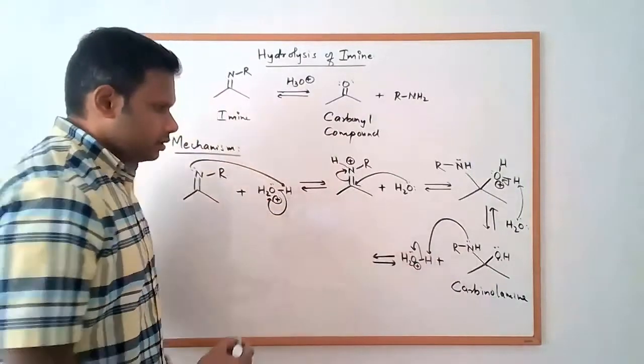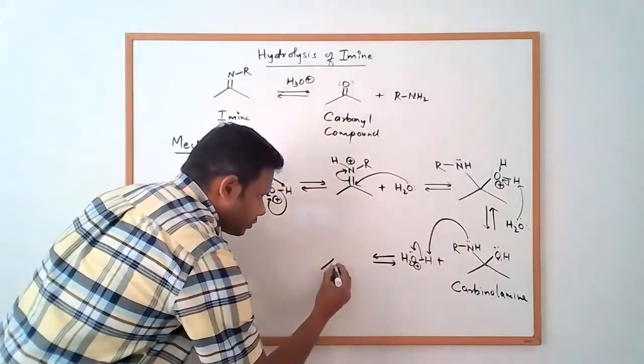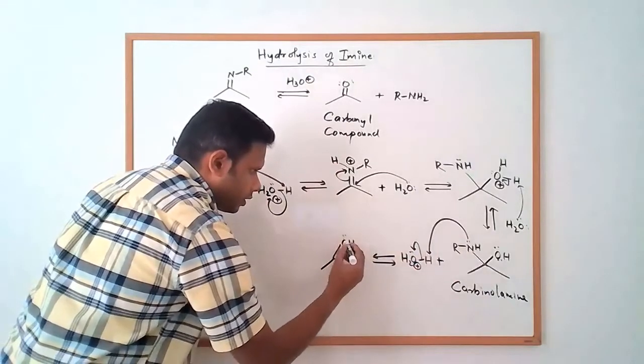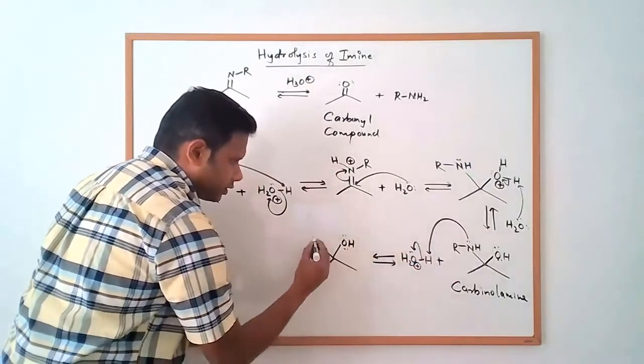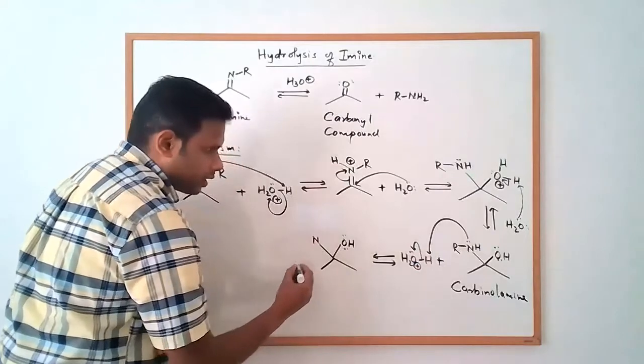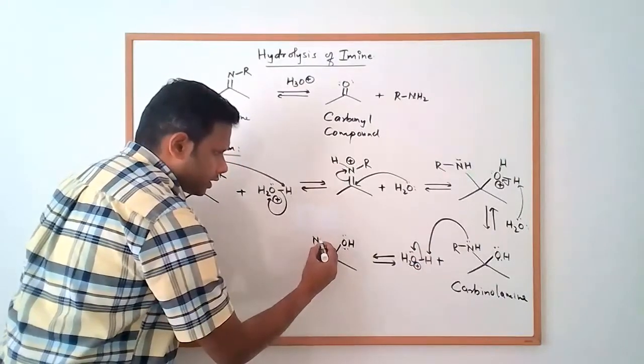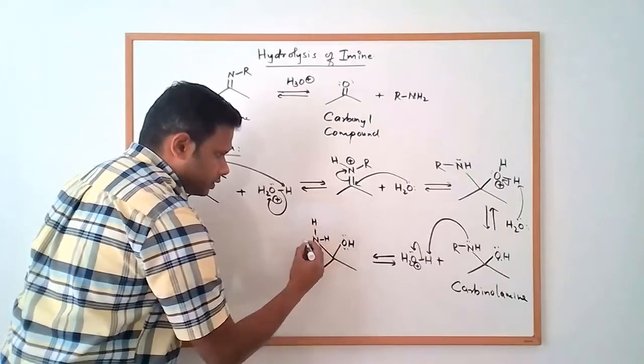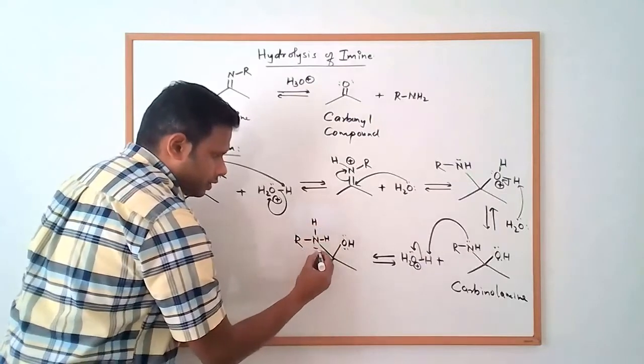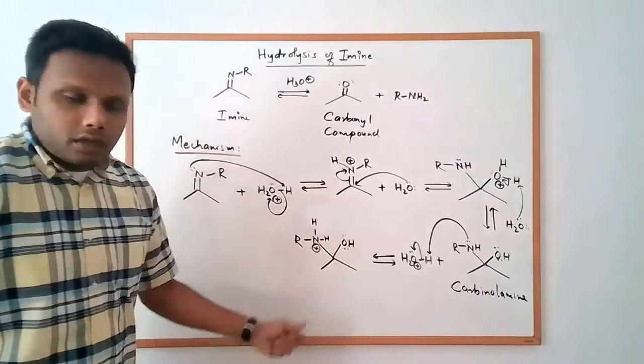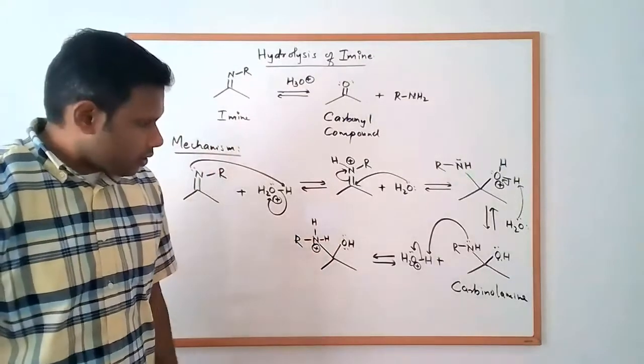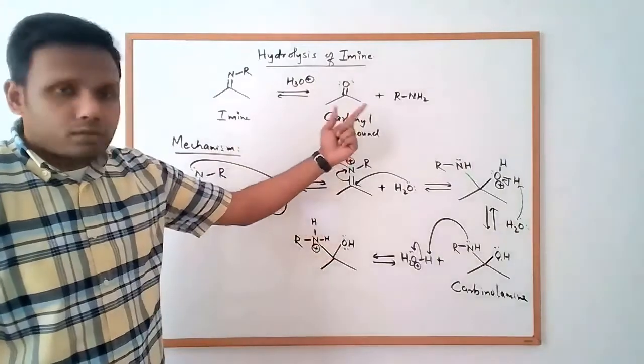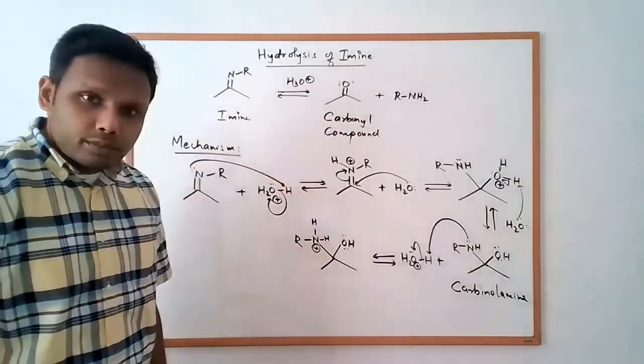So we can get the nitrogen protonated here so we'll have a hydroxyl group now, oxygen with two lone pairs and this nitrogen has two hydrogens on it so there's one hydrogen, a second hydrogen and then the R group and the nitrogen would have a formal charge on it. And now if you look at it we are getting really close to what our end products are.